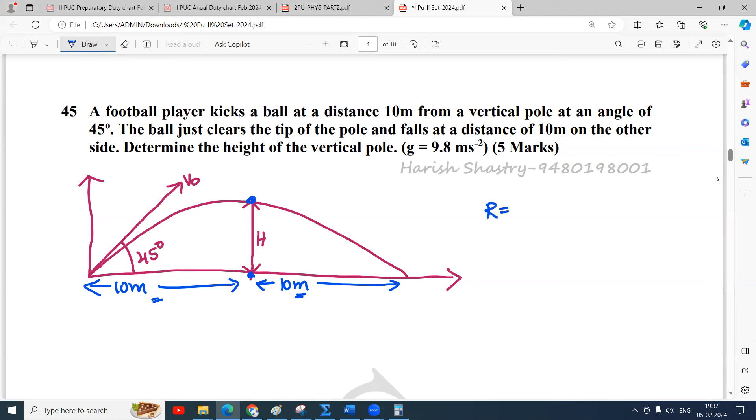The question is to find the height of the vertical pole. To find the height, we can use the range. We know that R equals V₀² sin(2θ₀) divided by g. R is 20, V₀² we don't know. Sin(2θ₀) is sin(2×45°), which becomes sin(90°) equals 1, divided by g.